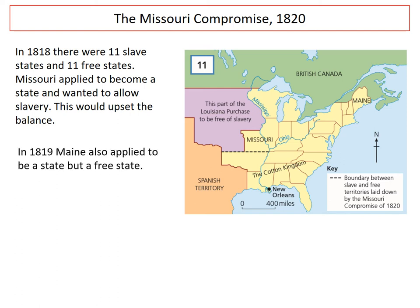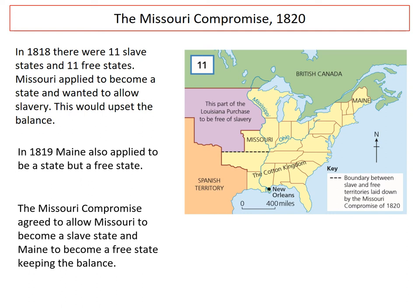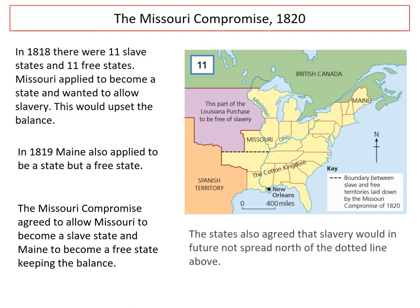But in 1819, Maine also applied to become a state, but as a free state, which allowed a chance for a compromise to be made. The Missouri Compromise was signed in 1820, allowing Missouri to become a slave state and Maine to become a free state, keeping the balance at 12 slave states and 12 free states, so neither could enforce their power in Congress to make laws favourable to one side. This idea was kept for the next 30 years — for every slave state added, a free state had to be added too. They also agreed that slavery would never spread north of the Missouri Compromise line shown on the map.